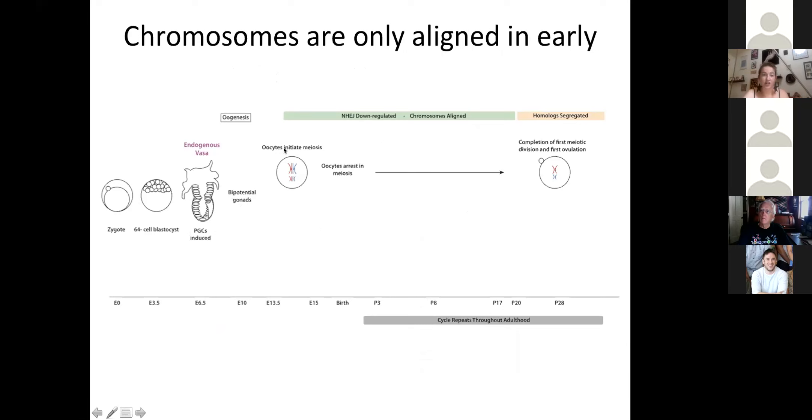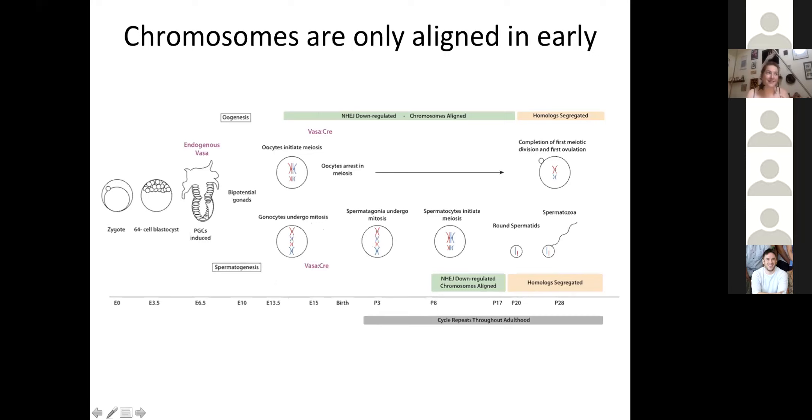We think that the difference between the female germ line and the male germ line phenotype that we saw comes down to timing. Basically, you have bipotential gonads when you're at about E10. And then if you're going through oogenesis, the oocytes initiate meiosis almost right away at about E13.5. In contrast, spermatogenesis is fully mitotic for a really long time until well after birth. You only go into meiosis at about P7 or P8 if you're a male. And so our gene was being expressed, basically our Cre was turning on Cas9 expression at about E15 and more or less was turning on expression at a time when oocytes were meiotic and when spermatocytes were mitotic. So effectively what happened was chromosomes were only aligned in the female.